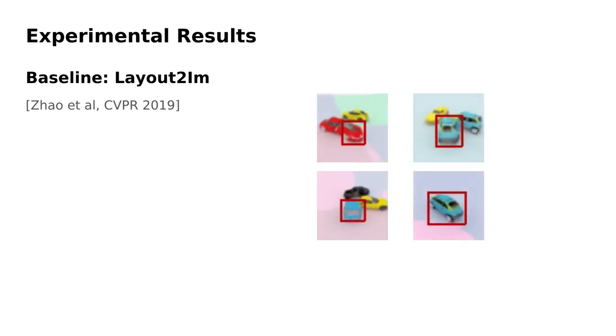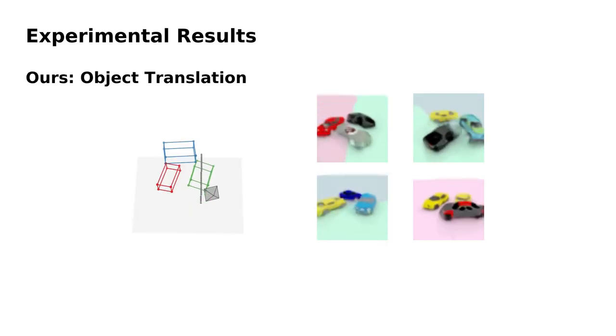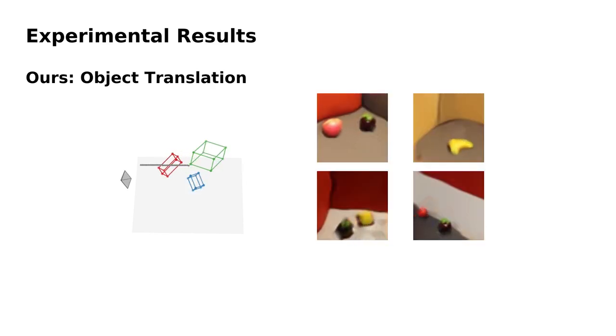While the 2D controllable baseline method fails to disentangle the object pose in identity, our method is fully 3D controllable in terms of 3D object translation, 3D object rotation, and camera viewpoint on both synthetic and real-world datasets.